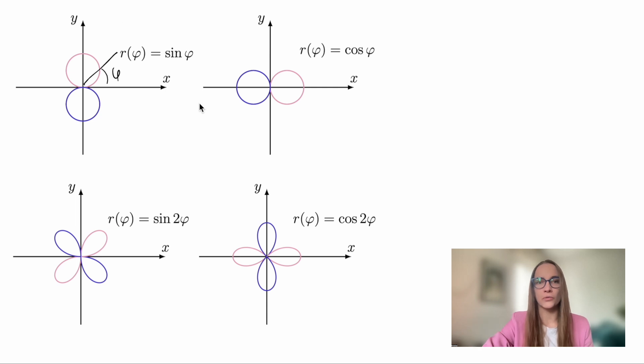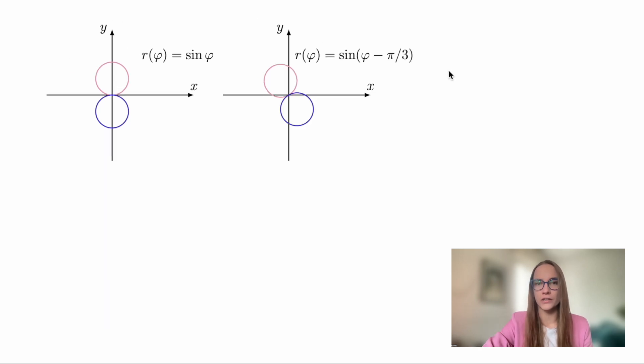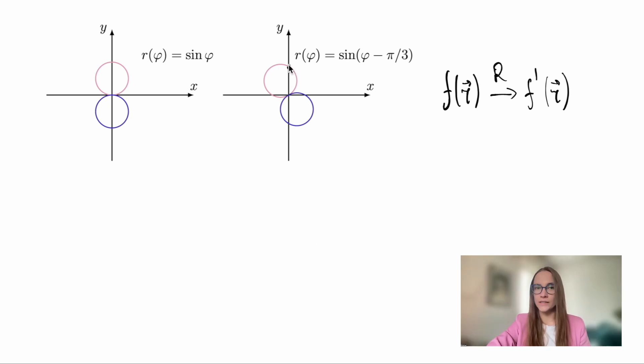Now, let's see how to write the transformation of a function of r when we rotate it. We will denote the rotation by the letter r. Let's look at it using the example of the function sin(phi). Notice that the value of the rotated function at some point k is equal to the value of the original function at the point k prime rotated by the opposite angle.